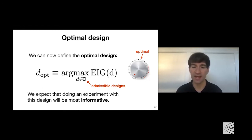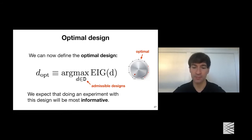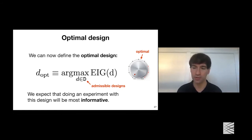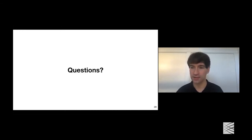Now that we have this EIG criterion, we can define the optimal design: simply the design d that maximizes EIG. We have some admissible set of designs — for example, allowable temperatures between 30 and 100 degrees Celsius — and we maximize over that set. Given our theoretical approach and faith in our model, we expect that doing an experiment with this design will be very informative. This effectively completes our formalization of how to use Bayesian and information-theoretic ideas to choose a good design.